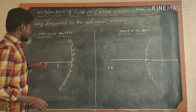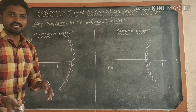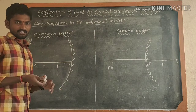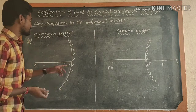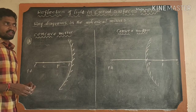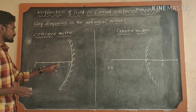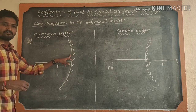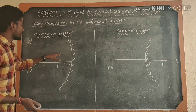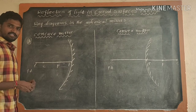When the light ray is passing through parallel to the principal axis, a reflected ray is formed and the reflected ray passes through along the focus. When the incident ray is passing through along the focus, a reflected ray is formed and the reflected ray is parallel to the principal axis.